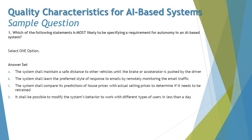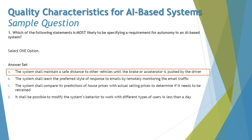Option D says: it shall be possible to modify the system's behavior to work with different types of users in less than a day. This is more about adaptability — specifying the maximum time it should take to make a change to the system. That's not a requirement for autonomy. The most relevant option is A, which totally talks about autonomy and defines the human intervention that marks the end of the system working autonomously.